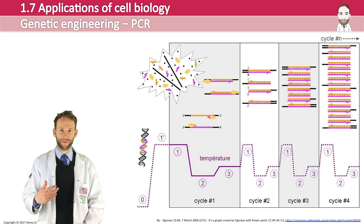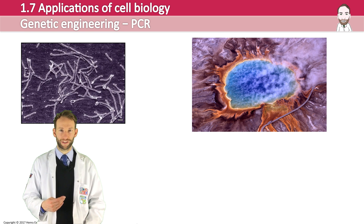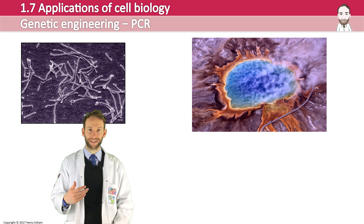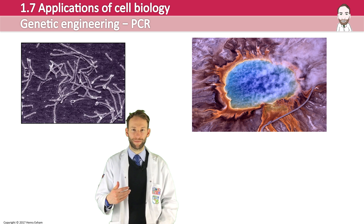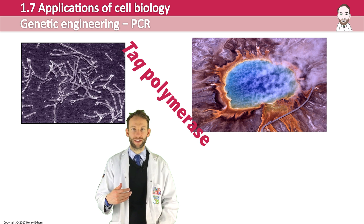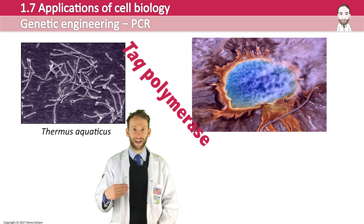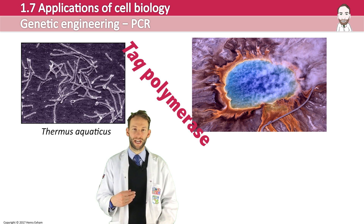The DNA polymerase used is a very special type. You may wonder why 72°C is an optimum temperature for an enzyme, but that's because this is TAQ polymerase, which comes from a bacterium called Thermus aquaticus that lives in hot springs and hydrothermal vents. It has evolved a DNA polymerase enzyme that can withstand very high temperatures — what we call a thermostable enzyme.